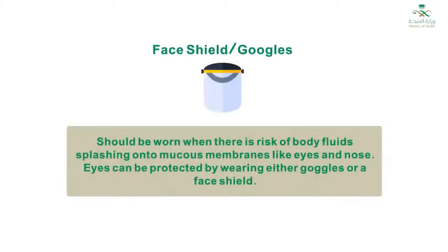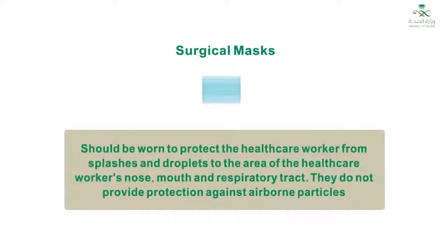Face shield or goggles should be worn when there is a risk of body fluids splashing onto mucous membranes, like eyes and nose. Eyes can be protected by wearing either goggles or a face shield. Surgical masks should be worn to protect the healthcare worker from splashes and droplets to the area of the healthcare worker's nose, mouth, and respiratory tract. They do not provide protection against airborne particles.